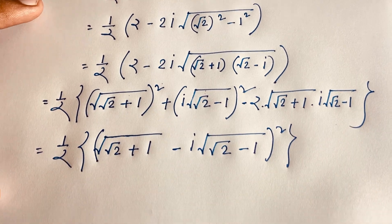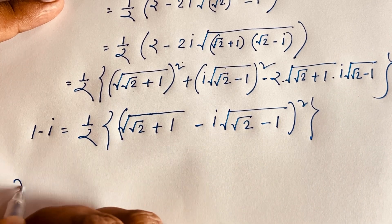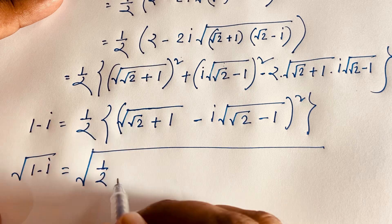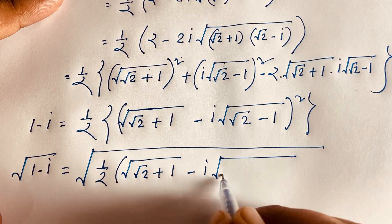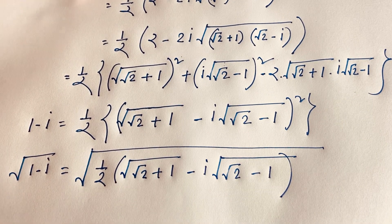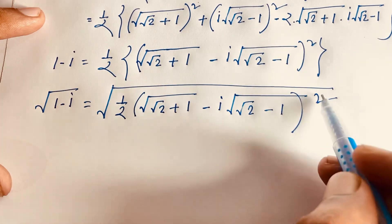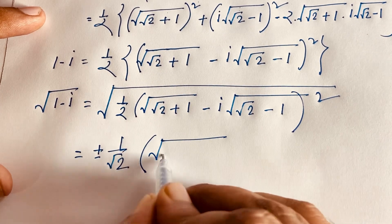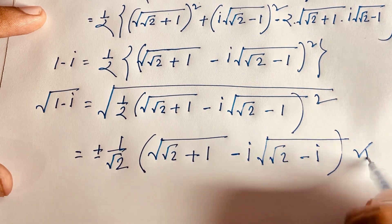So (a minus b)² equals a² plus b² minus 2ab. We find this equals 1 minus i. But our question is square root of (1 minus i), so applying the square root gives: 1 over 2 times (√(√2 plus 1) minus i·√(√2 minus 1)). The square cancels and we get plus or minus 1 over √2 times (√(√2 plus 1) minus i·√(√2 minus 1)). This is our final answer from Method 1.